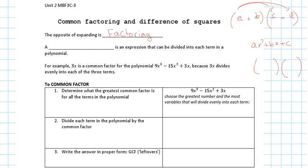There are three different processes we're going to learn — actually more than three in reality, but three in this class. The first one is the greatest common factor: factoring out the GCF. You pick the number or letter you can divide each term by. A greatest common factor is an expression that can be divided into each term in a polynomial — it can have a number and a letter.